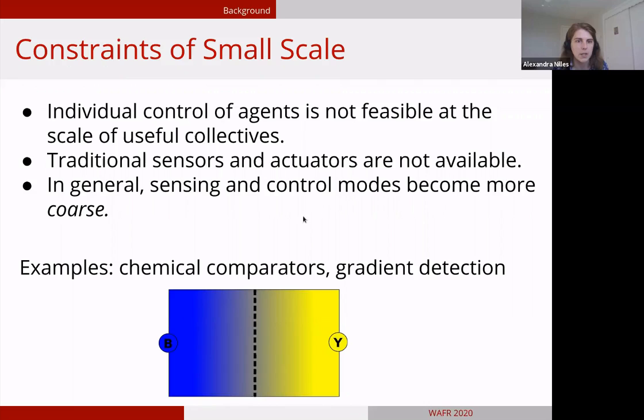I'll give an example of some of the sensors available at this scale. We have chemical comparators, which can tell you whether there's more of chemical A or chemical B present. We also might be able to detect a gradient, the direction of increasing concentration, even if we can't tell exactly where we are or where the source is. This picture shows two chemical sources, blue and yellow. If you have a comparator, you might be able to tell which region you're in, assuming the chemicals are diffusing evenly. And you would be able to tell which direction the sources are in from anywhere in this environment.